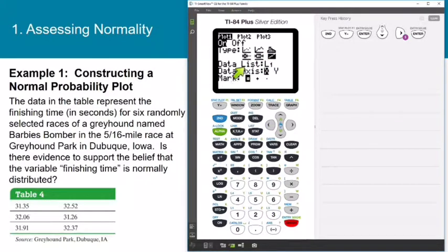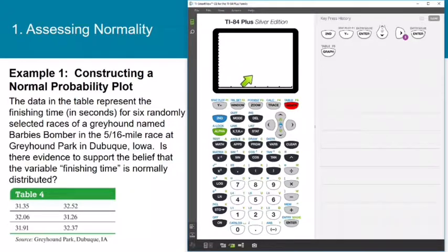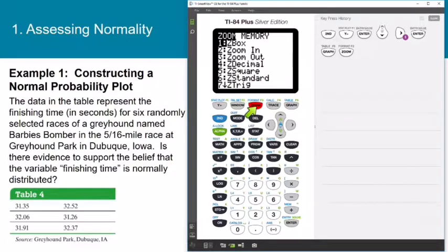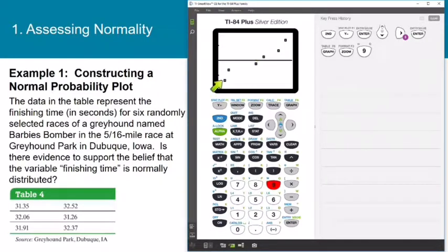You can see that my options changed down here. Now data list needs to be set wherever you have your data stored. Mine are stored in list one. Data access, you can just leave that at X, and you can change the mark to whatever you want. I just always leave this first option selected. Now we are going to hit graph over here on the right. If you can't see anything, remember that means you're not zoomed in properly. Hit the zoom key, and then to zoom in on the statistical data is option 9. You could either arrow down to number 9 using the down arrow key, or you can just hit 9.